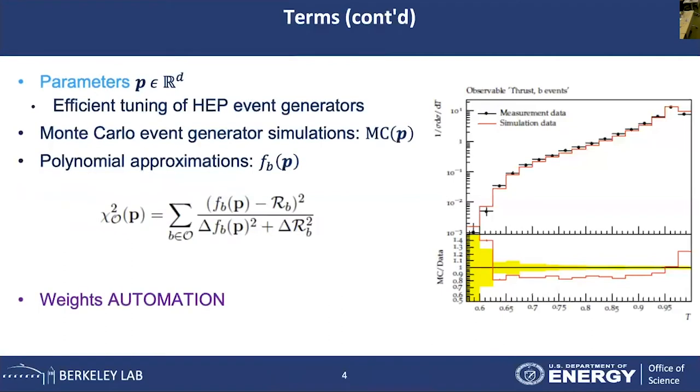The physicists want to tune the parameters in their high-energy physics event generators, denoted by MCP. But for just one simple simulation, it can cost thousands of hours to run. So instead of using these costly simulations, we want to use some cheap functions to approximate the simulation data. Here we use polynomial approximation, denoted as F_B for P.